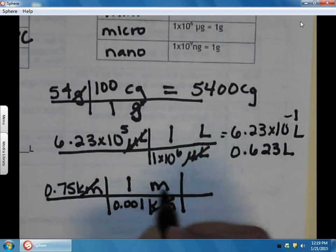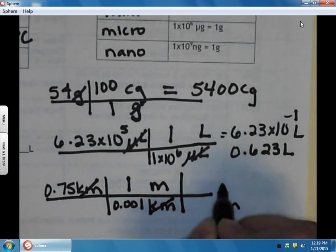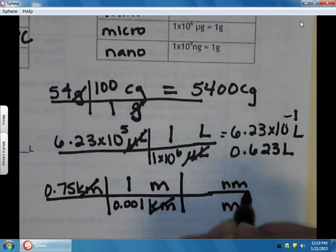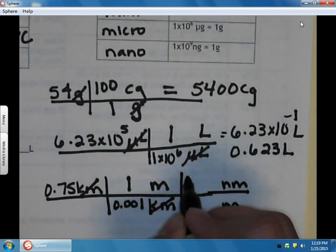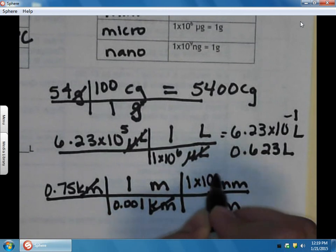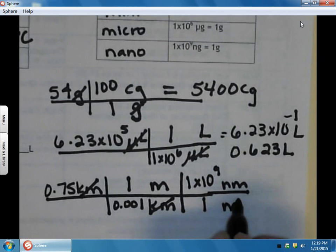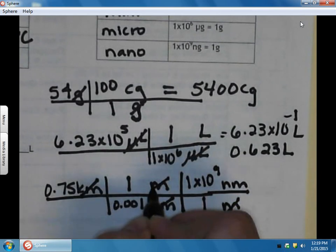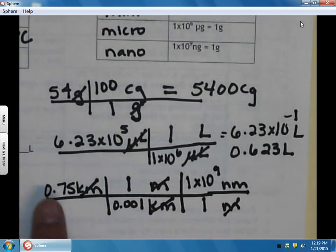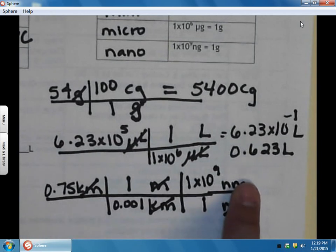In this case, we multiply across the top and divide by what's on the bottom.